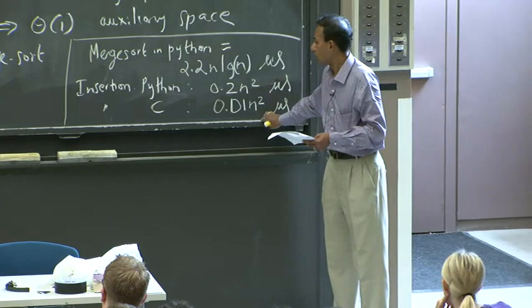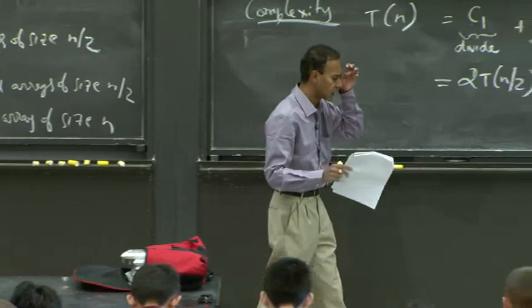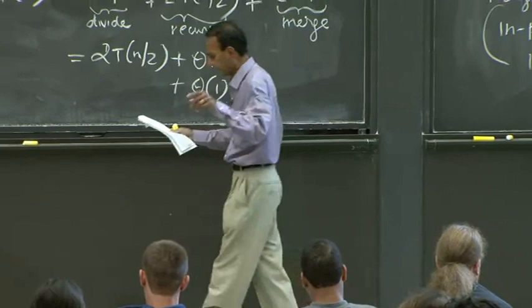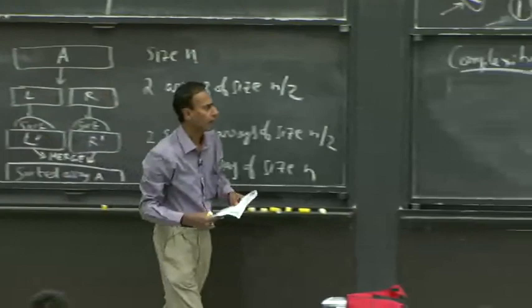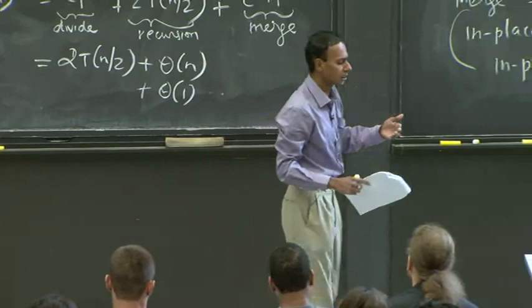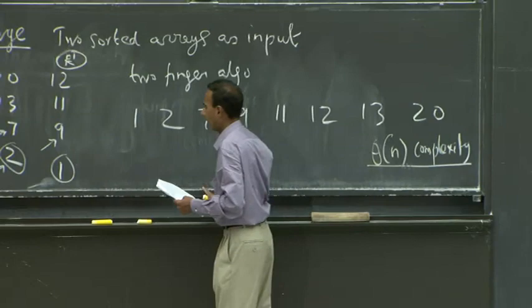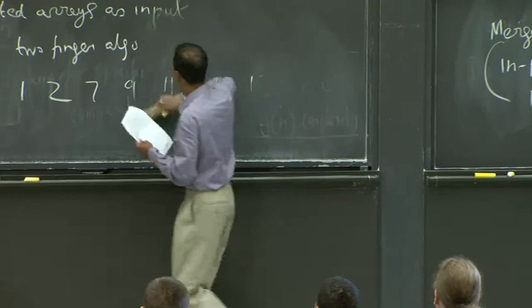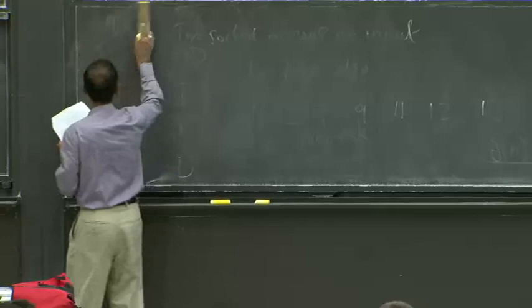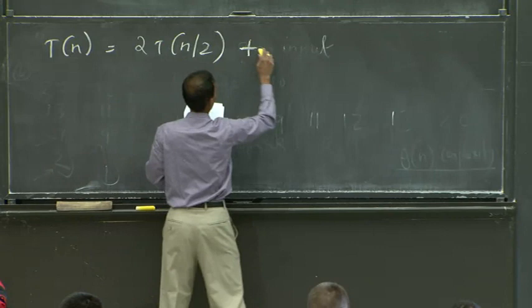That covers sorting. Next time we'll look at a very different sorting algorithm using heaps. For the remaining time, let's build intuition on recurrence solving. Consider T(n) = 2T(n/2) + cn². This could come from a crummy merge routine taking n² time. The recursion tree has the same structure: cn² at the top, cn²/4 appearing twice at the next level, cn²/16 appearing four times, and so on — same 1 + log n levels and n leaves.